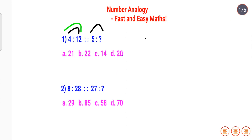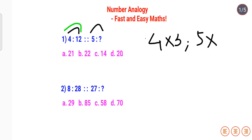So 4 is to 12 — I can say that 4 multiplied by 3 gets me 12. The number multiplying 4 is the number coming just before 4, which is 3. Similarly for the next one, 5 multiplied by the number coming before 5, which is 4. So 5 × 4 gives the answer as 20, and that is your answer.